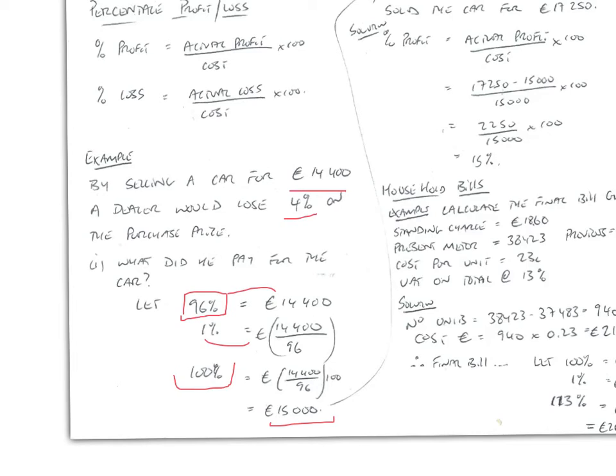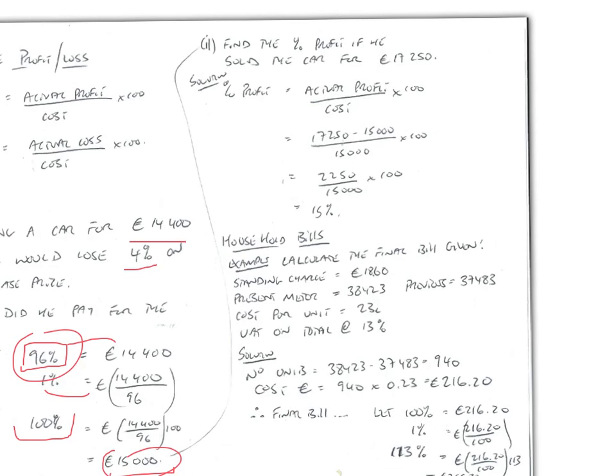In other words, he bought the car for 15. If he sold it for 14,400, he would lose 4%. So, this 15 represents 100%. This less 4% would represent 96%. Find the percentage profit if he sold the car for 17,250. Well, we just get the actual profit and divide that by the cost. So, 17,250 minus the 15,000 he paid for the car divided by the 15,000 times 100 means that he made a profit of 2,250 divided by the initial cost of 15,000 times 100, 15% profit.